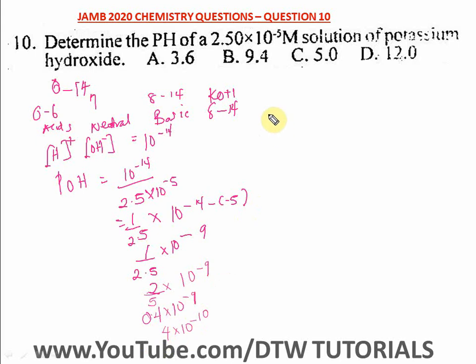But we are not there yet, we are looking for the pH. So pH equals to log 10 of 4.0 times 10 raised to power minus 10. So solving this, you have minus log 10 of 4.0 plus log 10 of 10 to the minus 10.